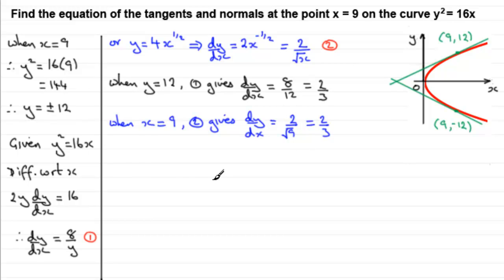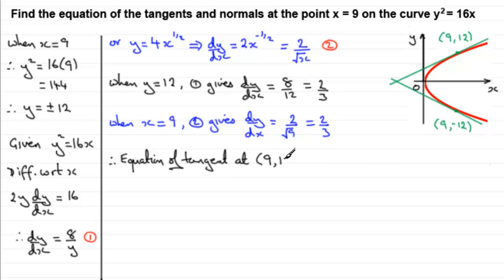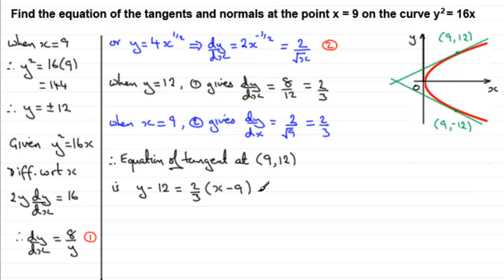So we can find the equation of the tangent at the point (9, 12). Using the standard formula y minus y1 equals m times (x minus x1), it will be y minus 12 equals two thirds multiplied by (x minus 9). I'll leave it to you to rearrange into any particular format — but that is the equation of the tangent at that point.